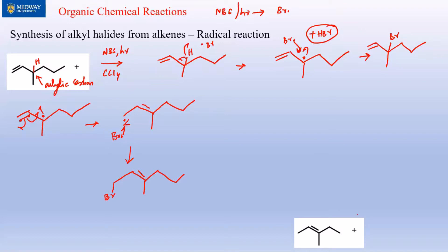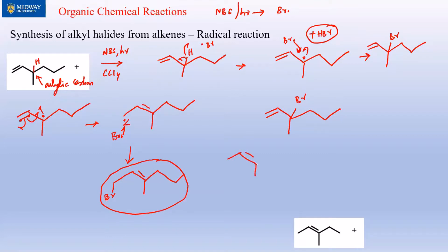Let's redraw both products next to each other to determine the major product. Based on Zaitsev's rule — whether you place Br above or below doesn't matter — the product with the double bond at the center is the major product, and the one with the double bond at the end is the minor product.